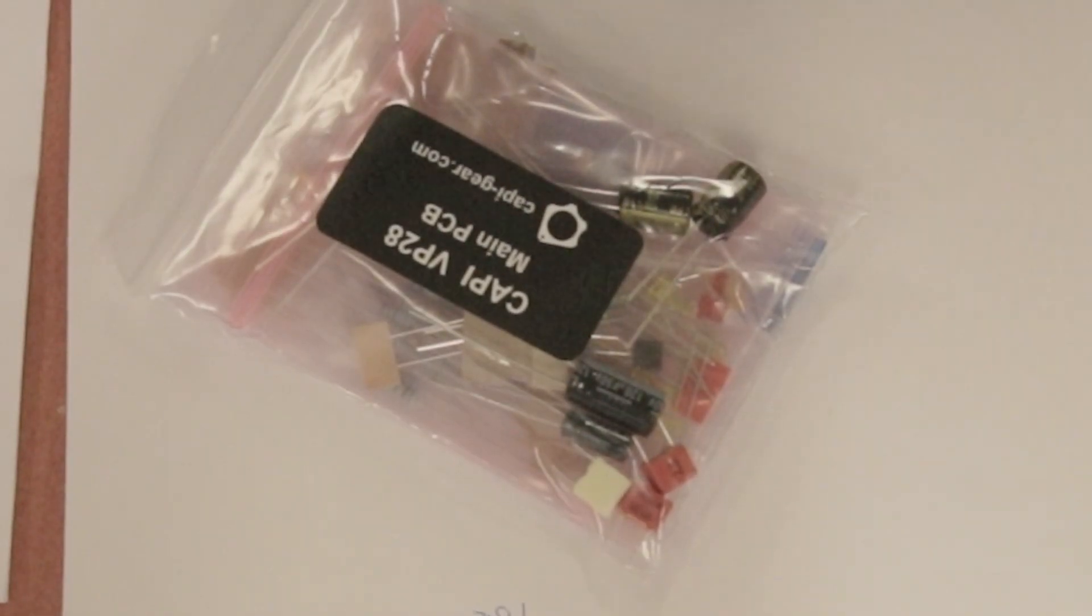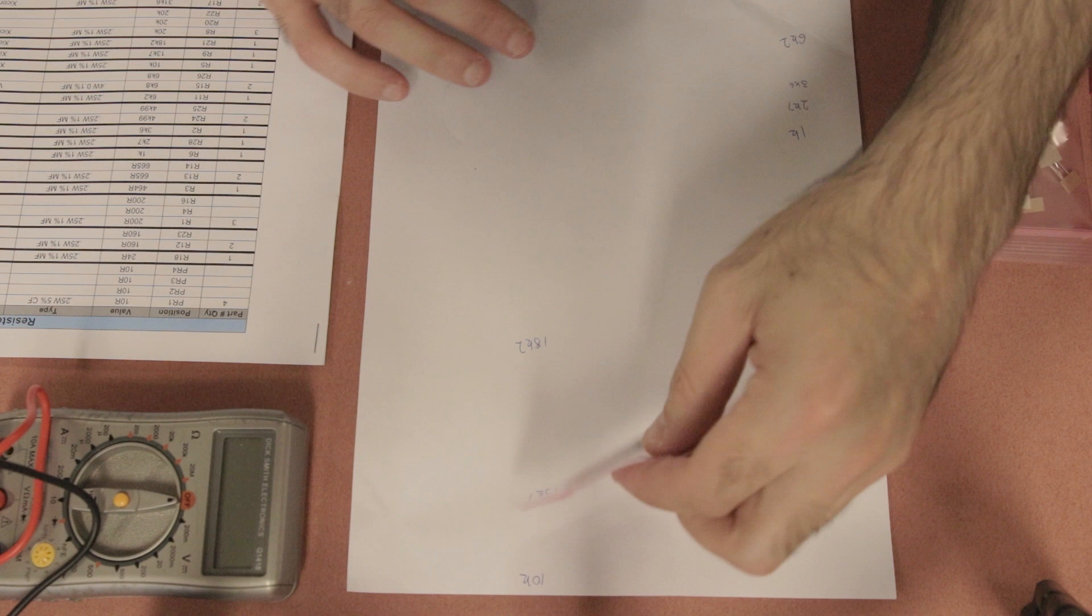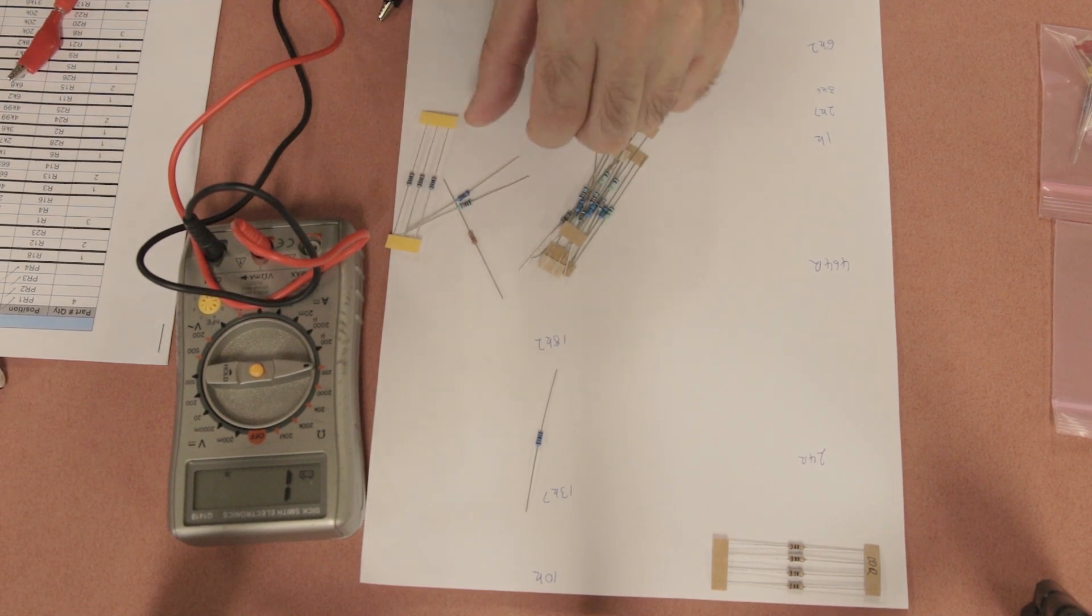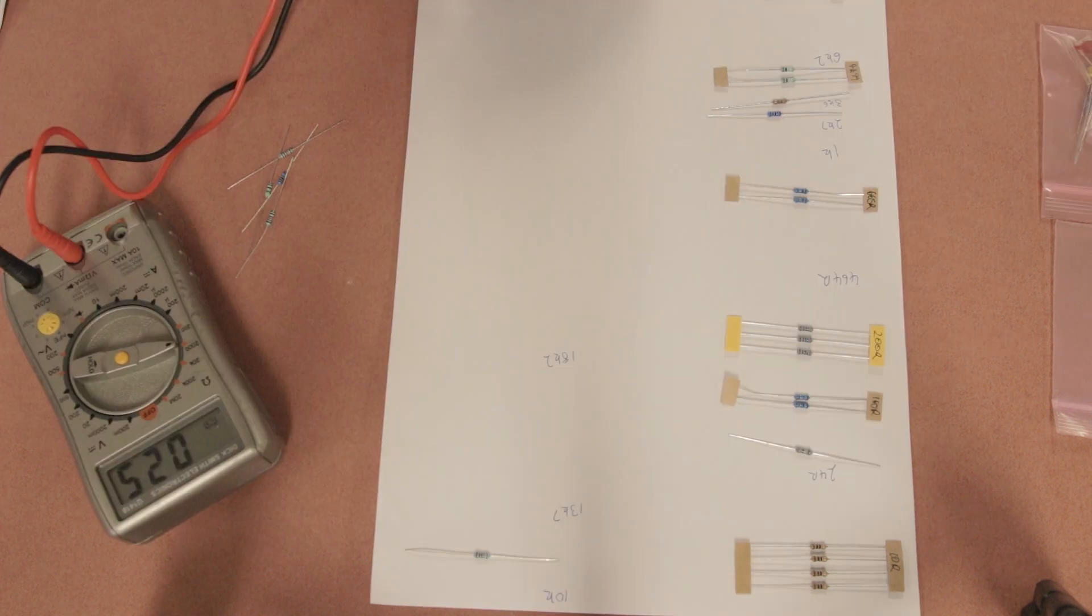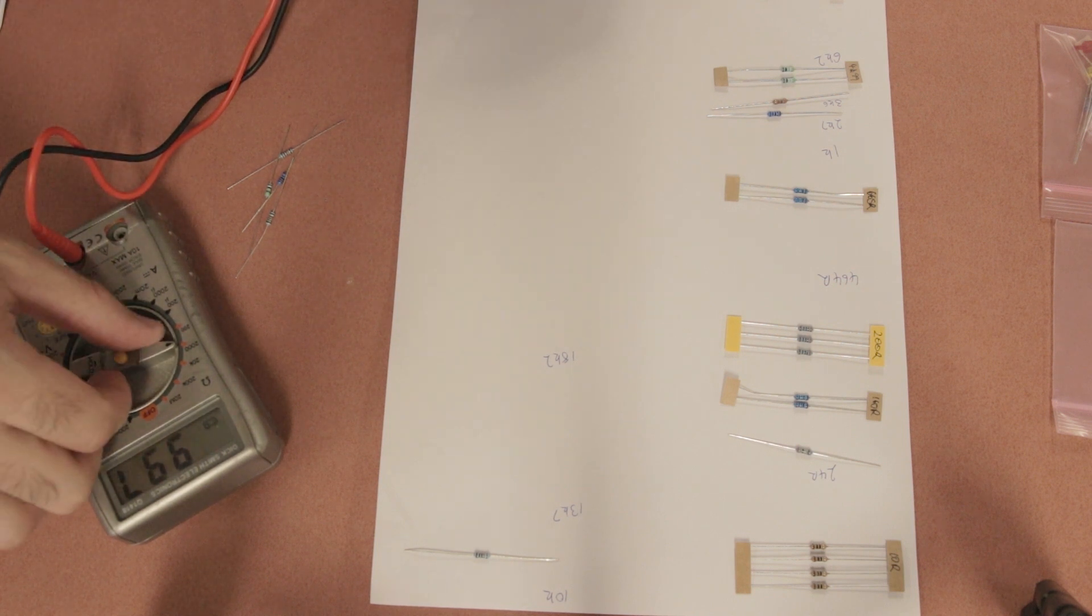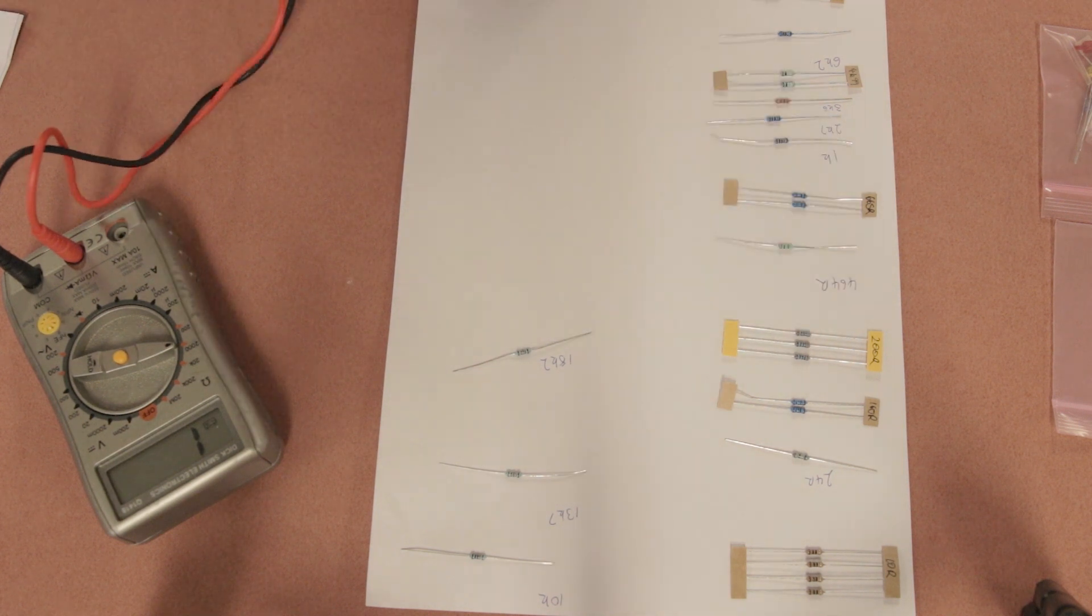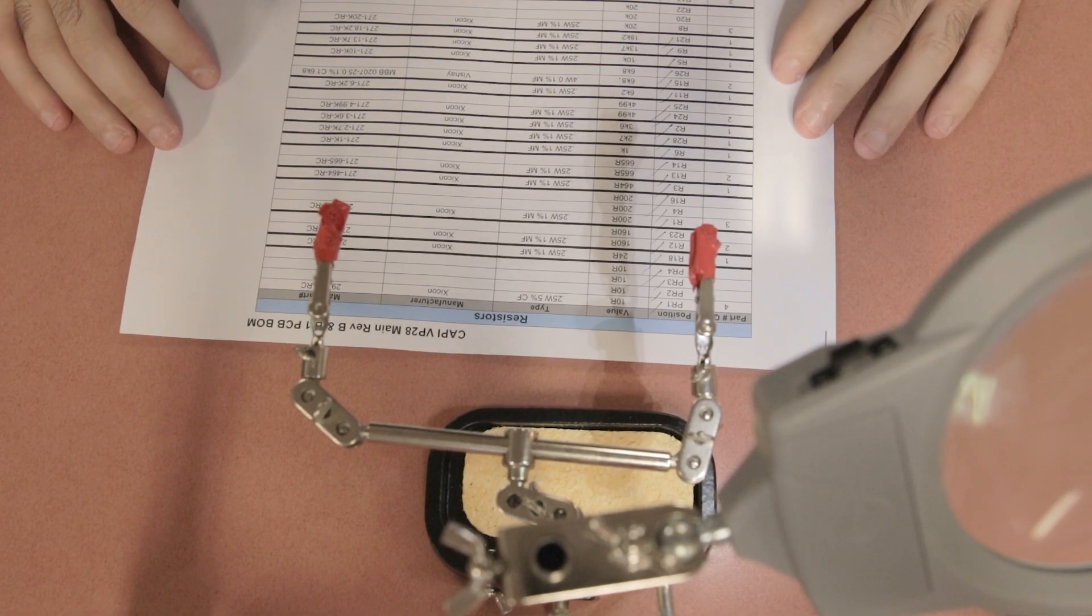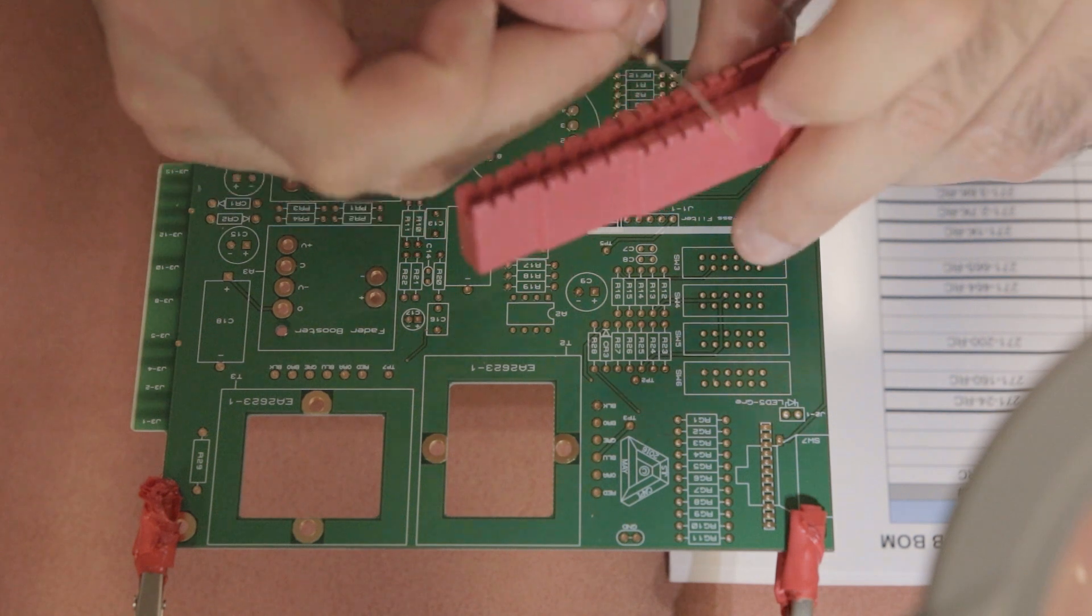First off in this build, you want to find the bag that says main PCB and empty that bag of all of its components and other bags. Find the bag of resistors and take those out and start separating them by resistance value. Some of the resistors have paper tags joining them, I've written their value there, but I've also got a piece of paper and written down the various values on the bill of materials sheet. That way I can lay all the resistors out in chronological order, which just makes it easier to find while you're putting these components in the board.